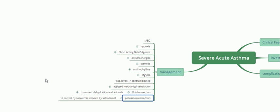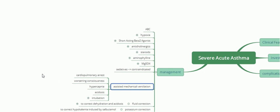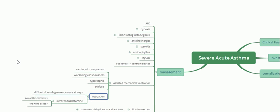Potassium correction and regular potassium monitoring are important due to hypokalemia caused by salbutamol. Assisted mechanical ventilation is indicated in cardiopulmonary arrest, in patients with worsening consciousness, in hypercapnia where serial ABGs every two hours show rising PaCO2, or in acidosis. Intubation can be difficult due to hyperresponsive airways and severe edema. Intravenous ketamine before intubation is helpful as it has sympathomimetic and therefore bronchodilator action.